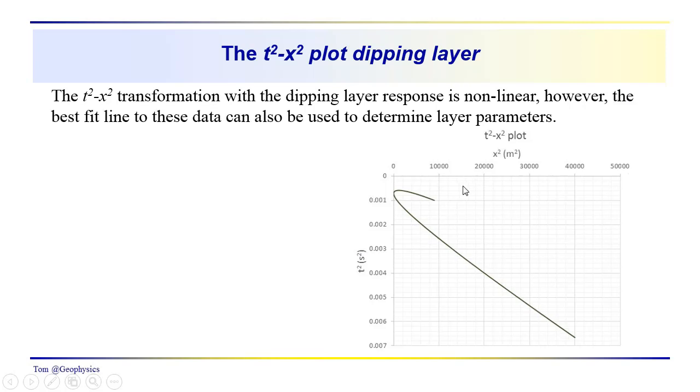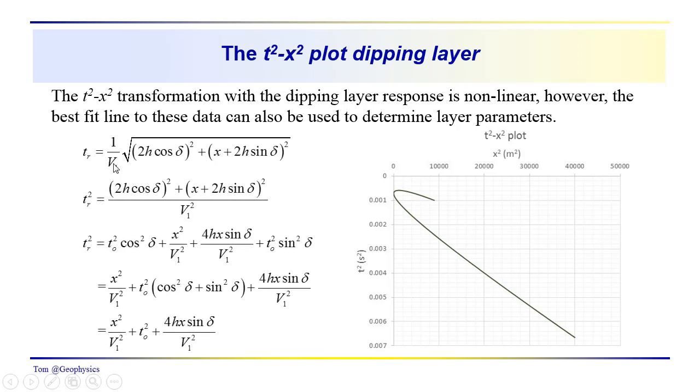When we take a look at this data and try to understand it, when we go back to the T2 X2 representation of the dipping layer relationship between T and X, you can see that we have these cosine and sine delta terms. If we square this, we get T sub r squared equal 2H cosine delta squared plus X plus 2H sine delta squared over V1 squared.